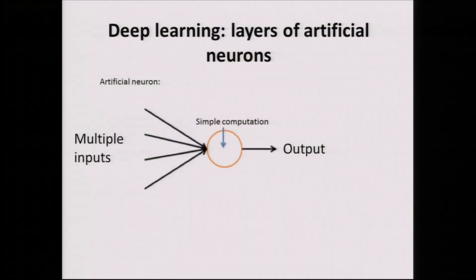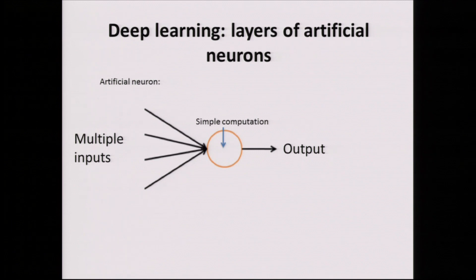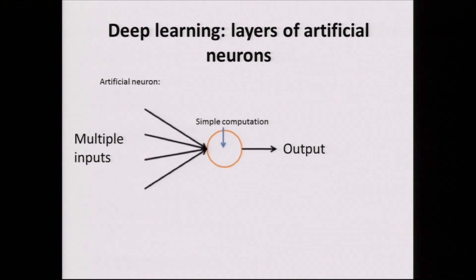Just a very simple overview of what deep learning is. Deep learning consists of multiple layers of artificial neurons. By analogy to a biological neuron, an artificial neuron takes a number of inputs, performs a simple computation, and produces an output. The key is that when you combine multiple neurons working together, you can start to describe very sophisticated patterns.